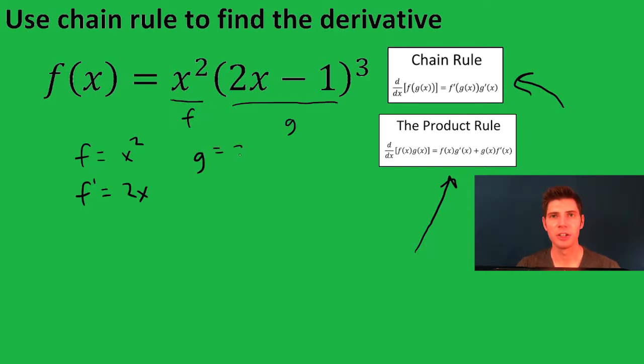g is going to be 2x minus 1 cubed and g prime is going to be, and this is where we're going to use the chain rule. So the 2x minus 1 is the inner function. It stays there. We bring the 3 down in front and square it.